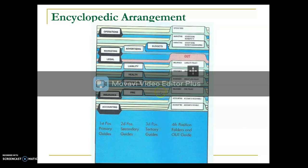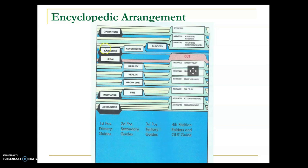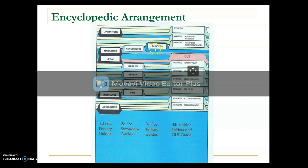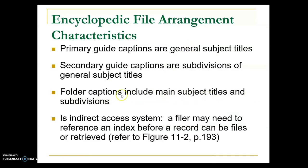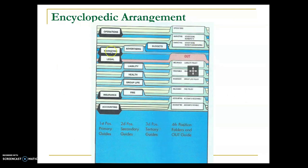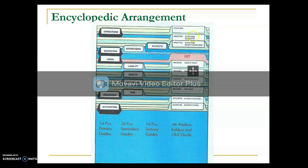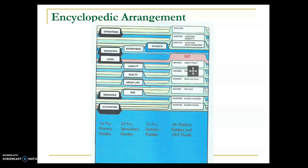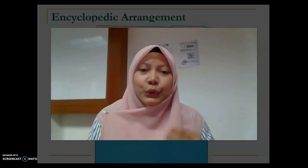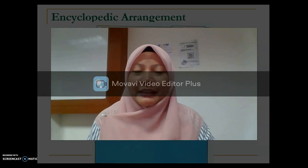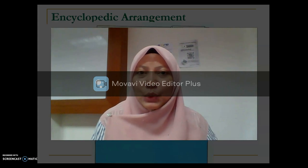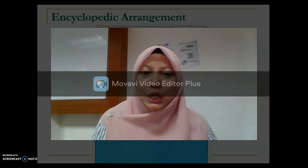Another example is the tertiary guide for Marketing, which is subdivided into Advertising, and under Advertising there is detail on Budget. The folder captions include the main subject title and subdivision — for example, Marketing > Advertising > Budget Newspaper, and Marketing > Advertising > Budget TV. So the subject is broken down into more detailed elements or units. With these explanations on both the dictionary and encyclopedic arrangements, you can see the difference between them. In the next video, we will continue with the coding part.